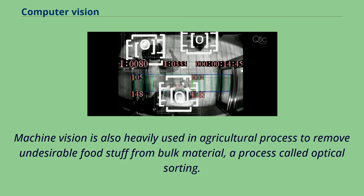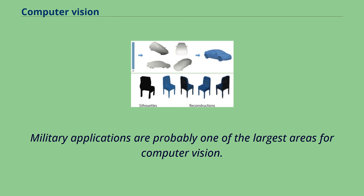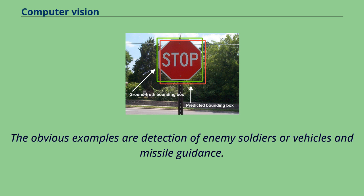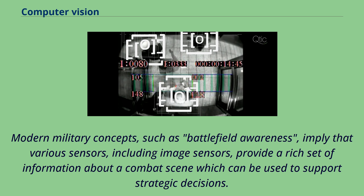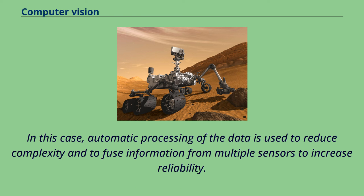Military applications are probably one of the largest areas for computer vision. The obvious examples are detection of enemy soldiers or vehicles, and missile guidance. More advanced systems for missile guidance send the missile to an area rather than a specific target, and target selection is made when the missile reaches the area based on locally acquired image data. Modern military concepts such as battlefield awareness imply that various sensors, including image sensors, provide a rich set of information about a combat scene which can be used to support strategic decisions. In this case, automatic processing of the data reduces complexity and fuses information from multiple sensors to increase reliability.